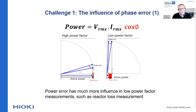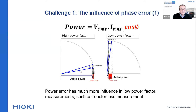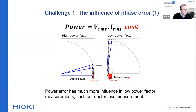The first challenge we face is the interference of phase error. Looking at two phase diagrams: on the left side you see the vector diagram of a device with a high power factor — for instance a power resistor — where the influence of the power error (the red area) is very small compared to the measured active power. However, on the right-hand side, the power error is very large compared to the measured active power. Therefore, as soon as you measure at low power factors, it's extremely important to compensate for the phase error.